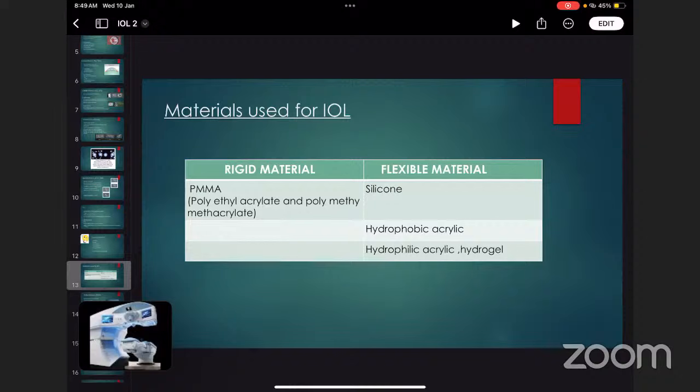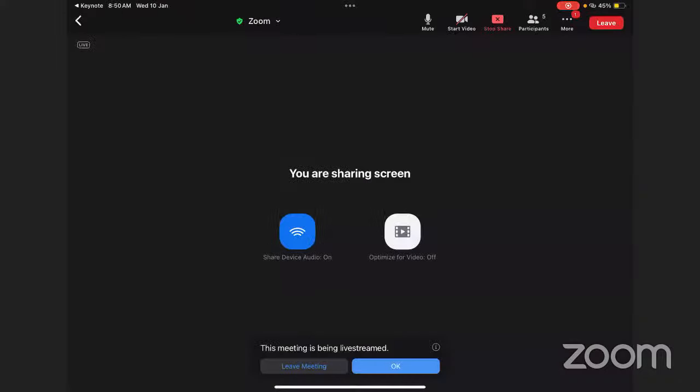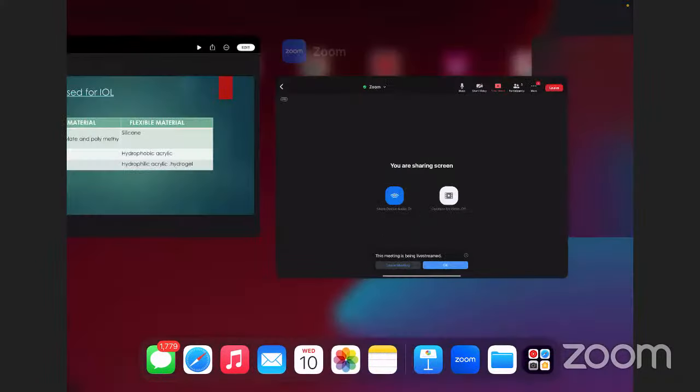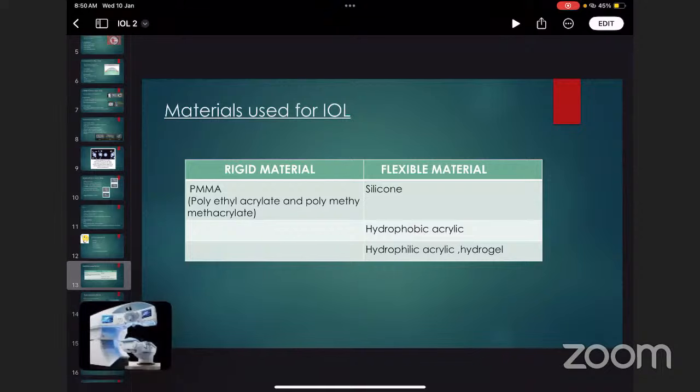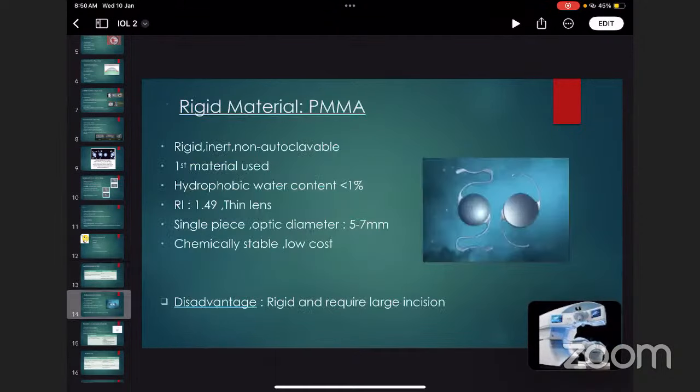Materials used for intraocular lenses: rigid material and flexible material. Rigid material is PMMA, polymethyl methacrylate. Flexible material includes silicone, hydrophobic acrylic, hydrophilic acrylic, and hydrogel.